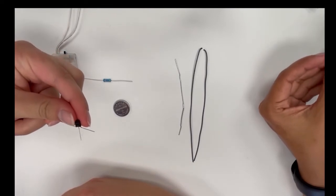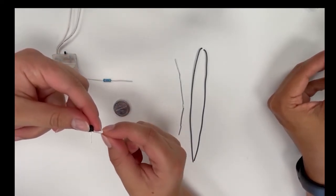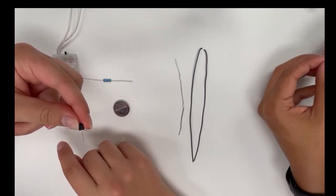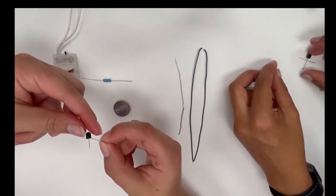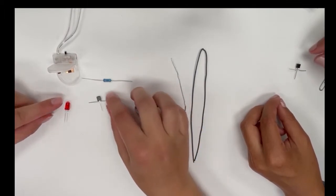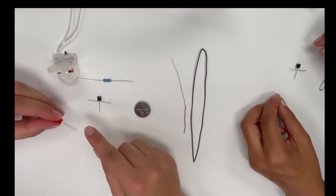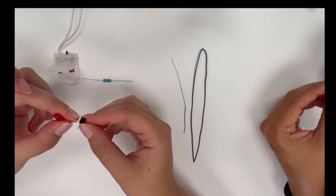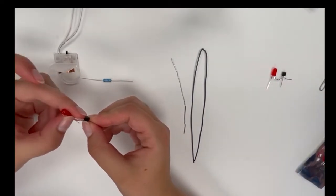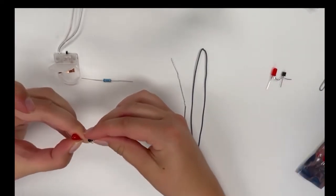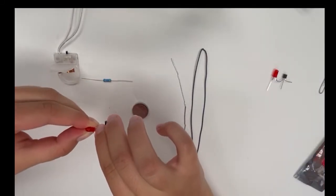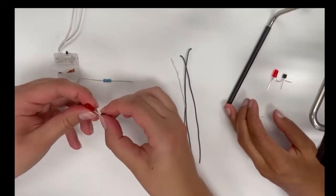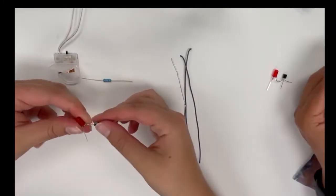So the one that is on the right is going to be the E and the one that is on the left is going to be the C. We are going to connect the C with the negative of the LED light. Let's put the transistor here and check which one is the negative of the LED light. The negative is the shortest rod. Twist them together.